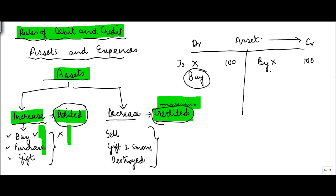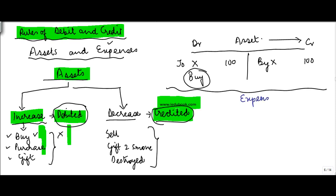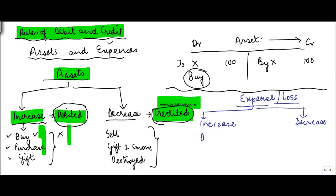Let's see for expenses. The rule of expenses — again, the expenses could be increased or decreased, and when I say expense I mean loss as well. So an increase in an expense or a loss, just like an asset, is debited, and a decrease is credited. The reason we clubbed these two together is that the rules for them are the same: any increase is debited, any decrease is credited.